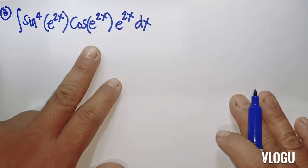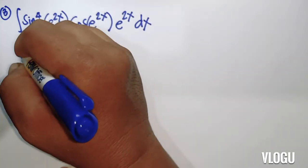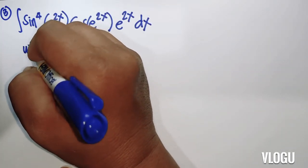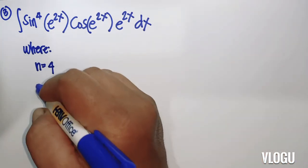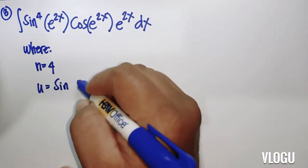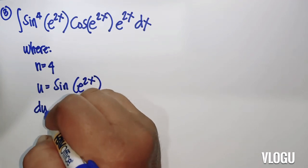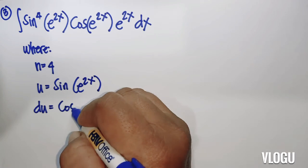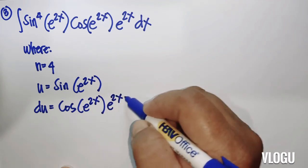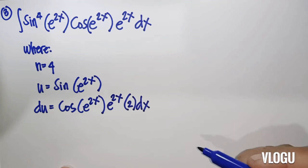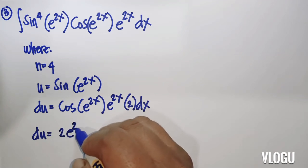The next example is the integral of sine to the fourth(e^(2x)) times cosine(e^(2x)) times e^(2x) dx. Here n equals 4 and u equals sine(e^(2x)). The derivative du equals cosine(e^(2x)) times the derivative of e^(2x), which is e^(2x) times 2 dx, so du equals 2e^(2x) cosine(e^(2x)) dx.